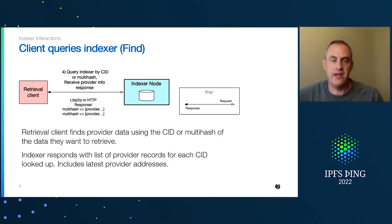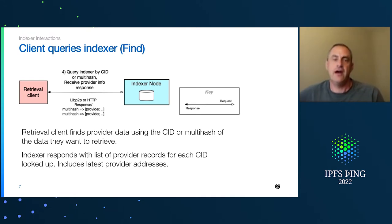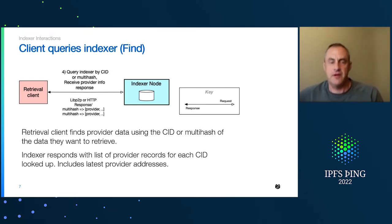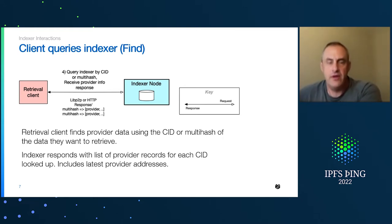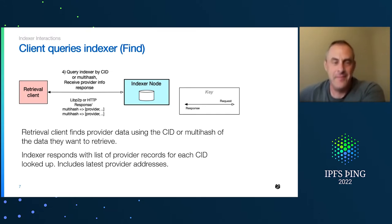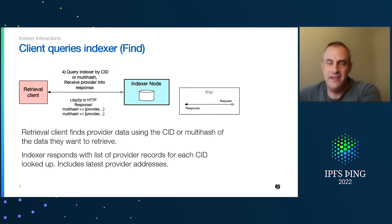A client is going to issue a query for a CID or a multi-hash, and the indexer is going to look up the provider information for that CID. It's going to respond with one or more provider records — if it has any — and say here are all the providers that provide this content and information about how to go retrieve that content from each of those providers.